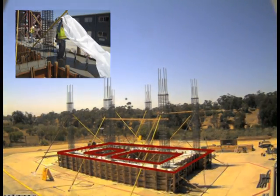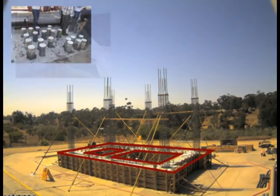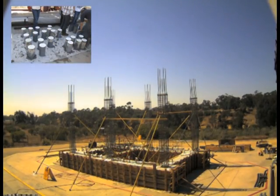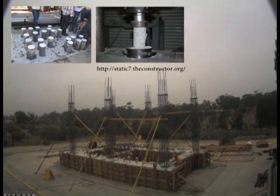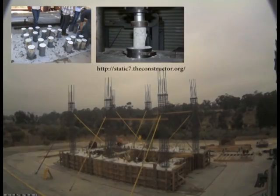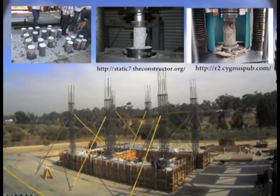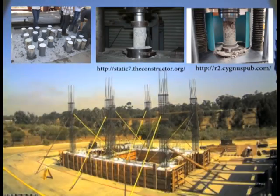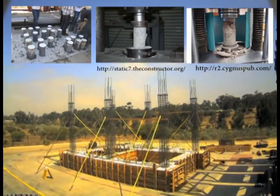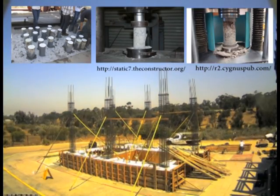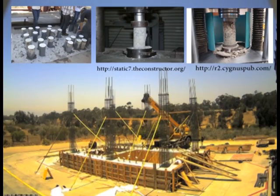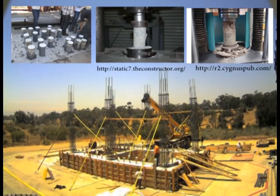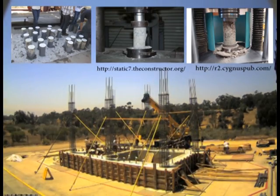During the pouring process, samples of the concrete are poured into small cylinders, which are prepared for testing at various stages of the curing process to assess the concrete's strength. After 28 days of curing, the concrete should reach around 90% of its design strength.